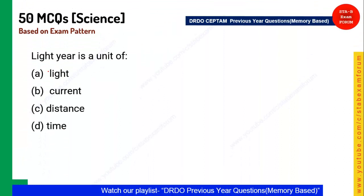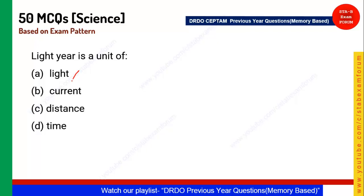A simple question: A light year is a unit of what? You might think it's a unit of time because of the word 'year,' but a light year is actually a unit of distance.